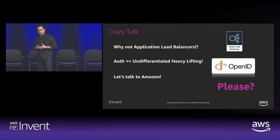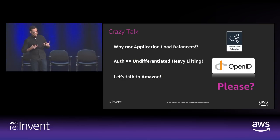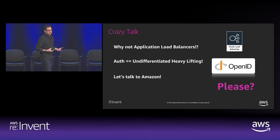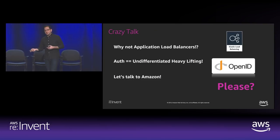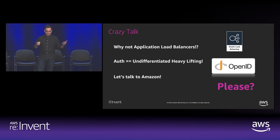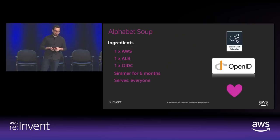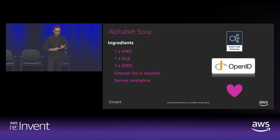We had a kind of crazy idea: these Application Load Balancers from Amazon have been getting more and more sophisticated. What if we considered auth to be yet another function of the Application Load Balancer? Viewed through the right lens, authentication is some undifferentiated heavy lifting — it's standardized and could be implemented in a common way. Being an OpenID Connect shop already leveraging Application Load Balancers, we came to Amazon and asked if they had anything in the works. Here's what they cooked up: OpenID Connect natively implemented on the Application Load Balancer.